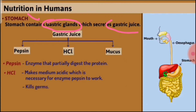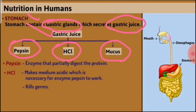The stomach has a gastric gland which secretes gastric juice. In gastric juice we can find three main components: the enzyme pepsin, hydrochloric acid (HCl), and mucus. The main role of pepsin is to digest protein.